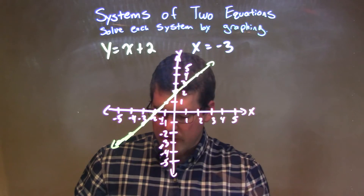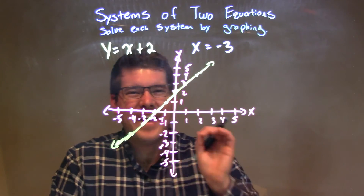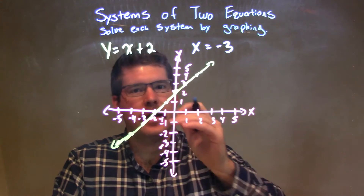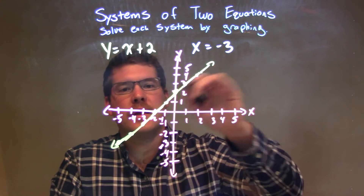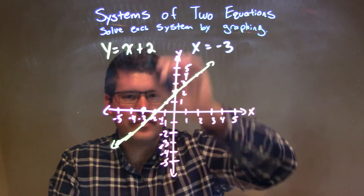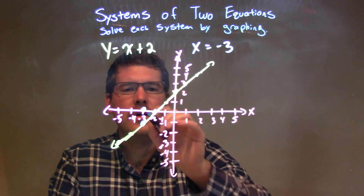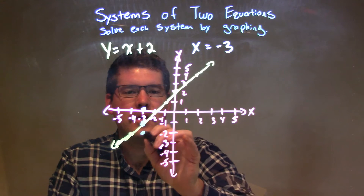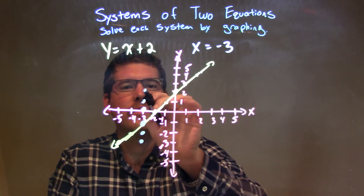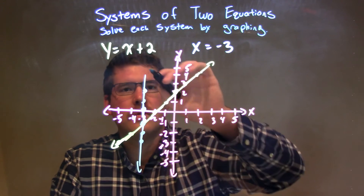The next equation is x equals negative 3. When we have x equals a number, that's going to be a vertical line at that number on the x-axis. So x equals negative 3 — we look at negative 3 on the x-axis, put a point, and our line goes vertically up and down. We plot points at negative 3, negative 1; negative 3, negative 2; negative 3, negative 3; negative 3, positive 1; and negative 3, positive 2.